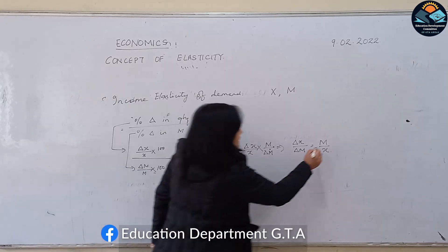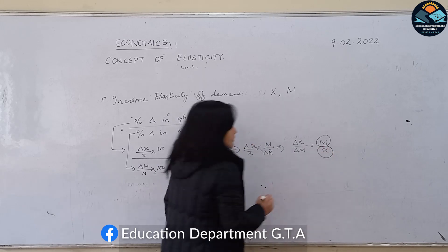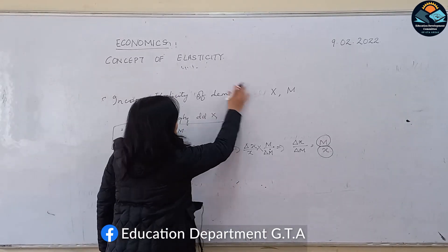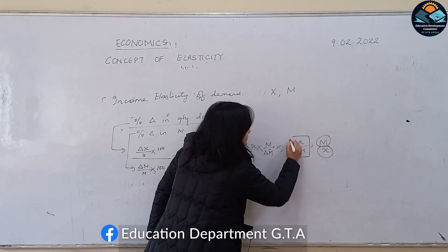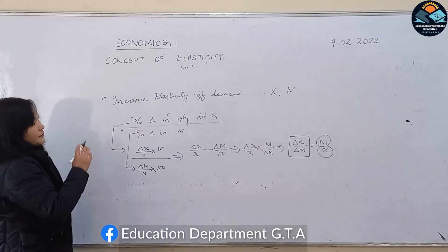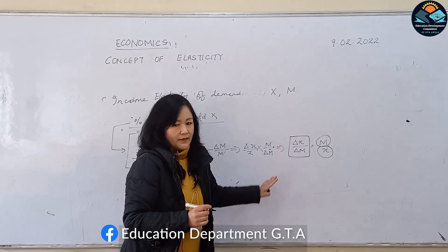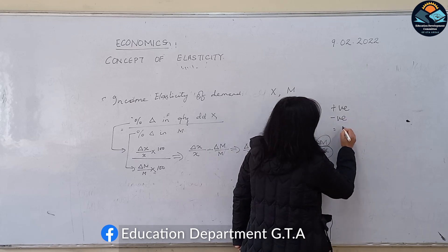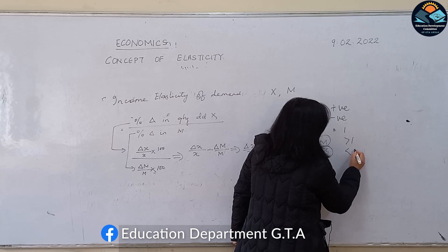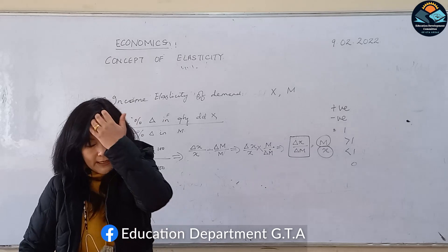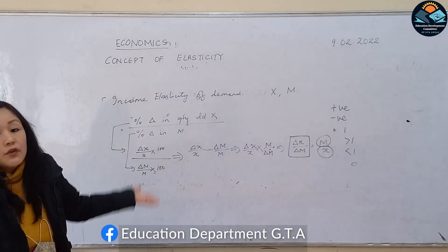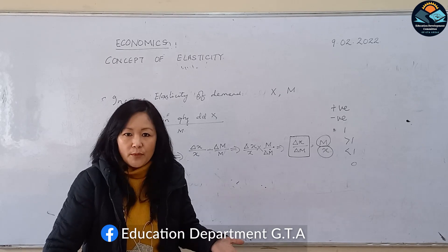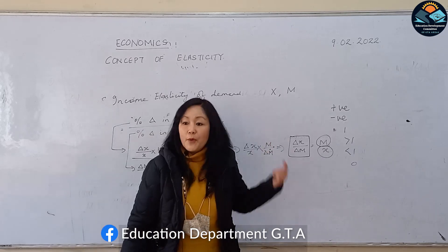Your income elasticity can either be positive, negative, greater than one, less than one, or zero. In the case of normal goods, whenever there is an increase in income of a person, the demand for normal goods will increase. So in that case, your income elasticity of demand will be positive in case of normal goods.